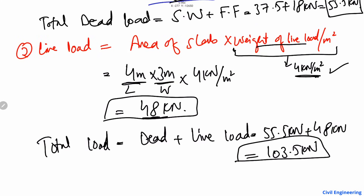So 103.5 kilonewton is the total load acting on the reinforced concrete slab. I hope you guys understand how to find out the total load on the reinforced concrete slab. Don't forget to subscribe to our channel for daily civil engineering videos. Thank you for watching.